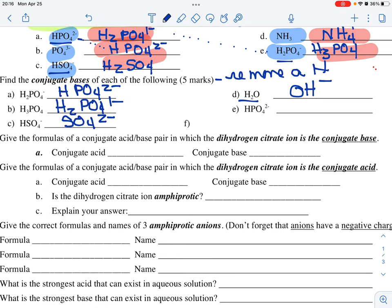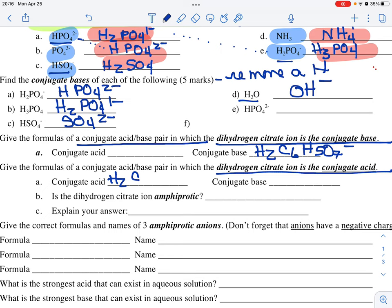Next, we are going to give the formulas of a conjugate acid-base pair in which dihydrogen citrate is the conjugate base. Dihydrogen citrate is the conjugate base. So I'm going to tell you that dihydrogen citrate is H2C6H5O7 minus. That is dihydrogen citrate. Now, if we need the next problem, if we read the next problem, we can see that the dihydrogen citrate has to be the conjugate acid. So, I'm going to write the same formula here.